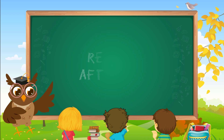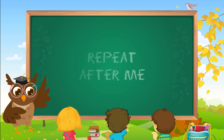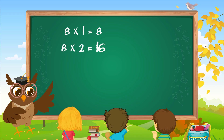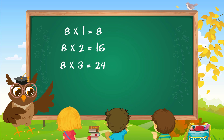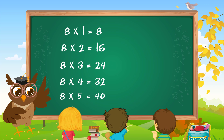Let's do this again. Repeat after me. Eight ones are eight. Eight twos are sixteen. Eight threes are twenty-four. Eight fours are thirty-two. Eight fives are forty.